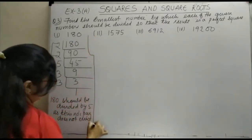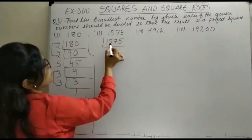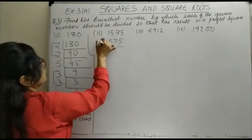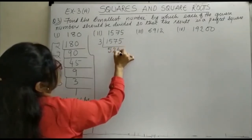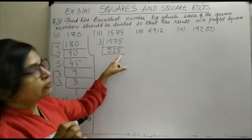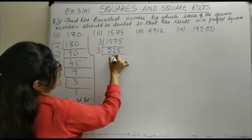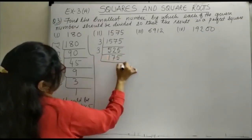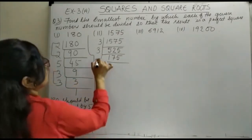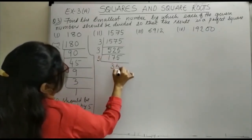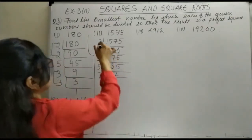Next, let us see 1575. We do the prime factorization: 3 divides 1575, then 3 divides 525, then 5 divides 175, then 5 divides 35, then 7 divides 7 to give 1. So the prime factors are 3 × 3 × 5 × 5 × 7. When we check the pairing, we find that 7 is unpaired — 7 into 1. So which number is unpaired here? 7.